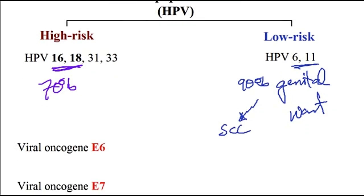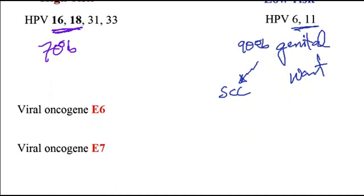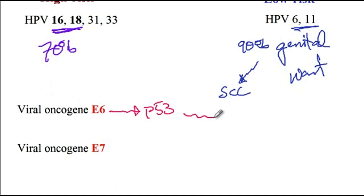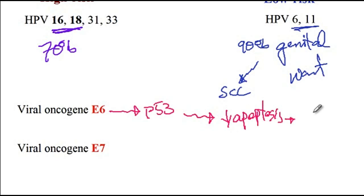As for the pathophysiology of HPV infection and how it can cause cancer, HPV produces two different oncogenic proteins. The E6 protein binds to the P53 tumor suppressor gene and causes its degradation. As a consequence, there is a decreased rate of apoptosis, which can cause accumulation of mutations, increased cell proliferation, and eventually cancer.